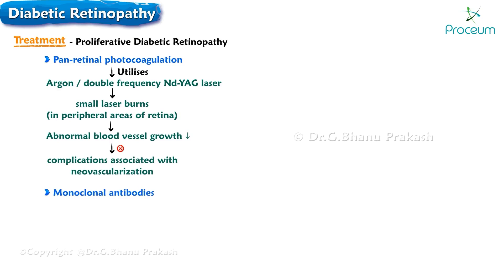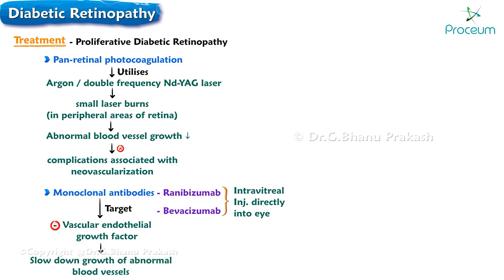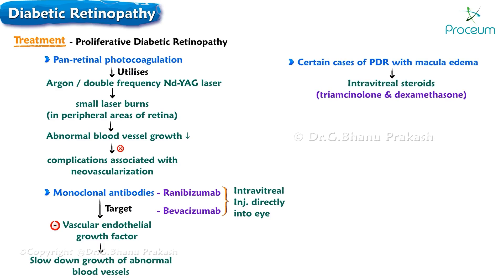Monoclonal antibodies that target vascular endothelial growth factor, such as ranibizumab and bevacizumab, can also be used. These medications are administered through intravitreal injections directly into the eye, inhibiting VEGF to slow down the growth of abnormal blood vessels. In certain cases with macular edema, intravitreal steroids like triamcinolone and dexamethasone may be administered to reduce inflammation and decrease fluid accumulation in the macula, thereby improving visual function.